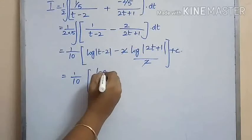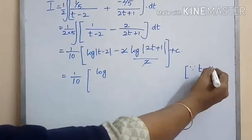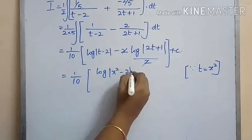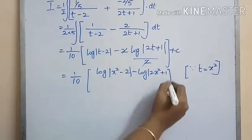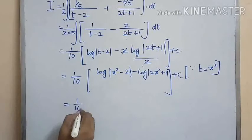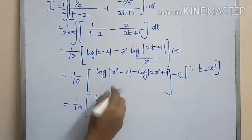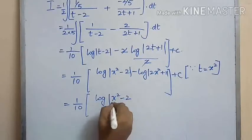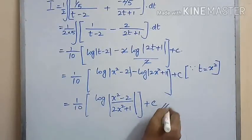The final answer is 1 by 10 into log of modulus x squared minus 2 minus log of modulus 2x squared plus 1, plus c. Since the log values are in difference, this can be written as 1 by 10 into log of modulus x squared minus 2 divided by 2x squared plus 1, plus c.